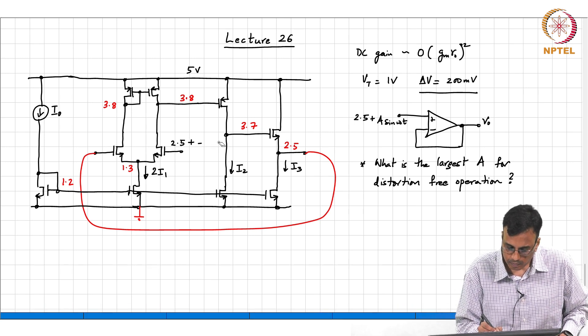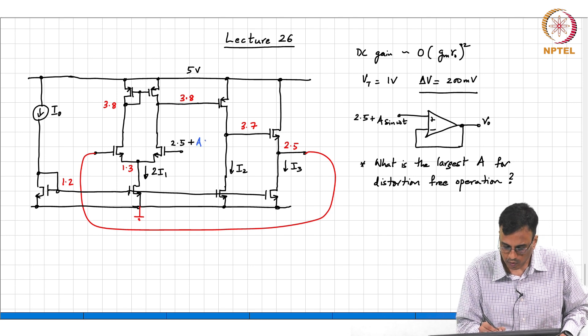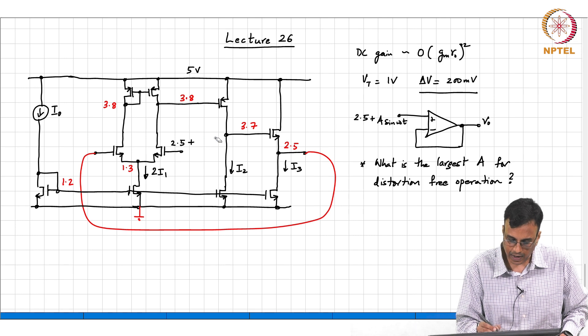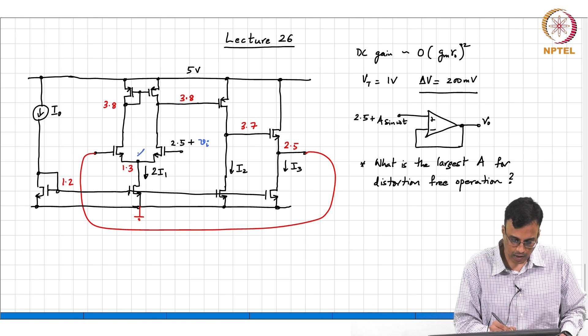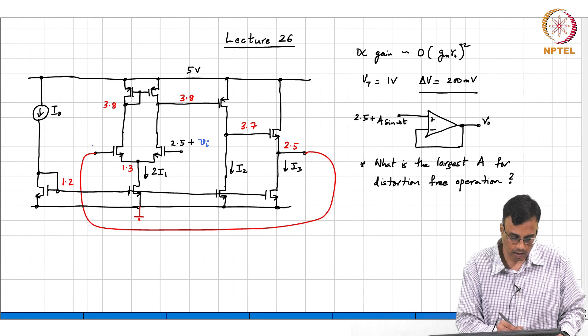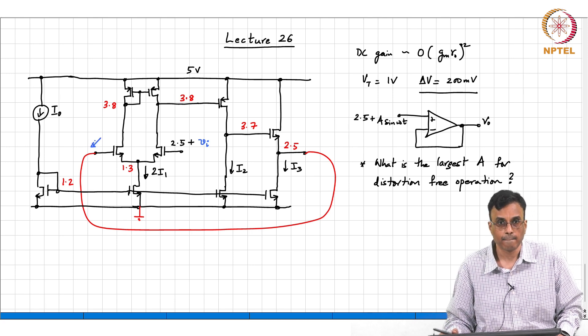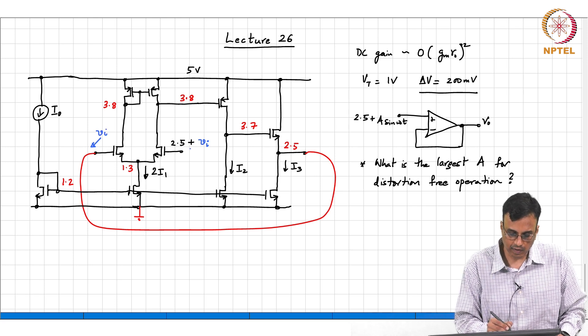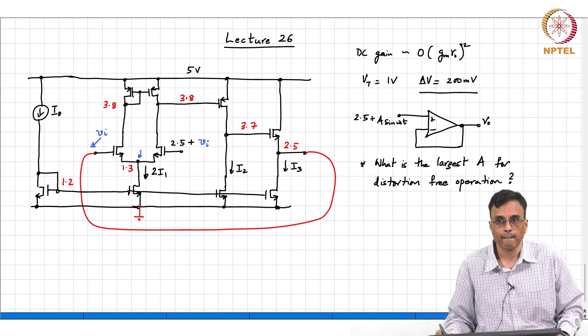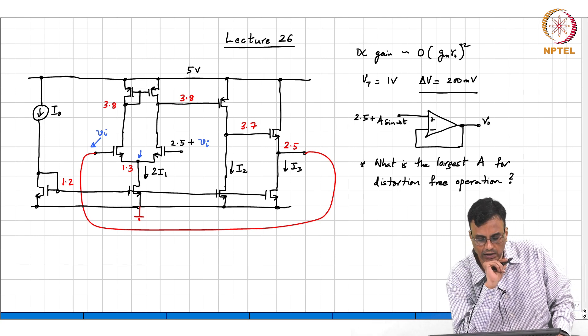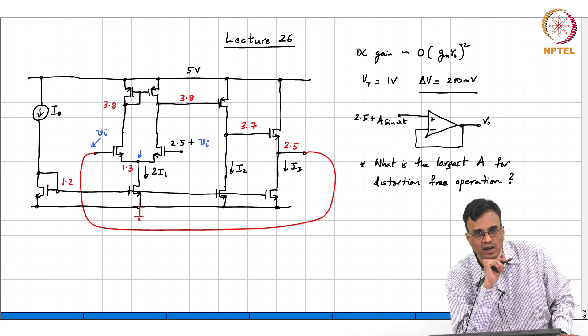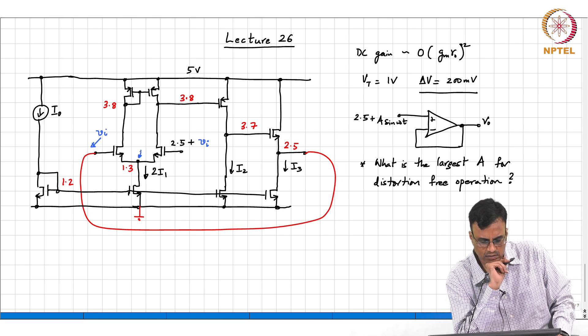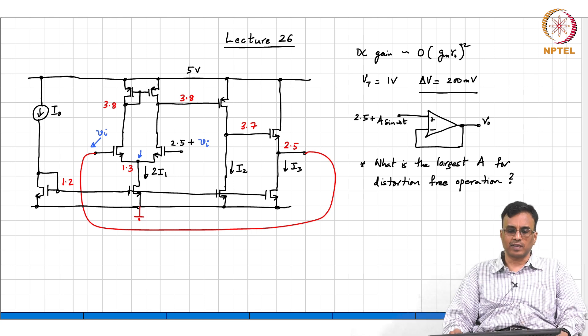So, if this is A sin omega t, let me mark all the incremental stuff in blue or let me call this VI, so that it is easier to track. Now, what comment can you make here or what comment can you make here? VI. If this is VI and this is VI, what comment can you make there? Assume for operating point and incremental voltage calculations, let us assume that RO is infinity. What is the voltage on the left side of the differential pair? What is the voltage on the right side VI?